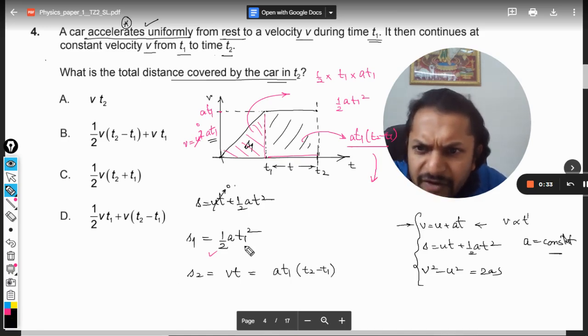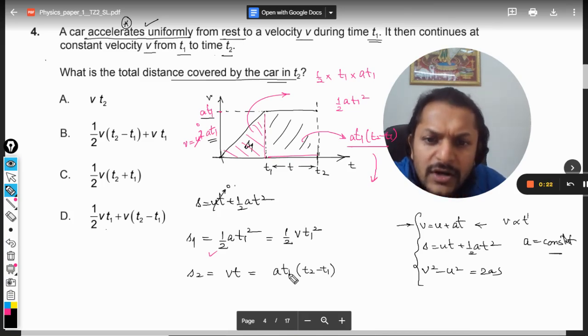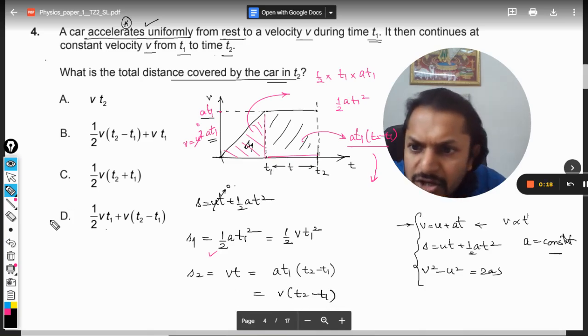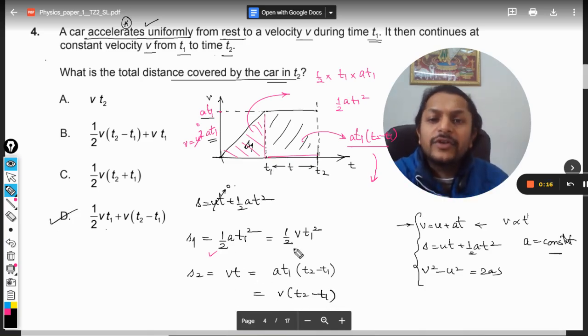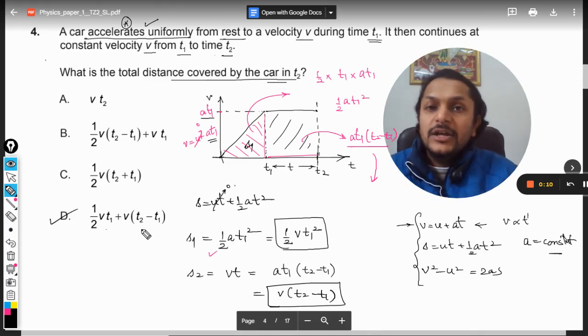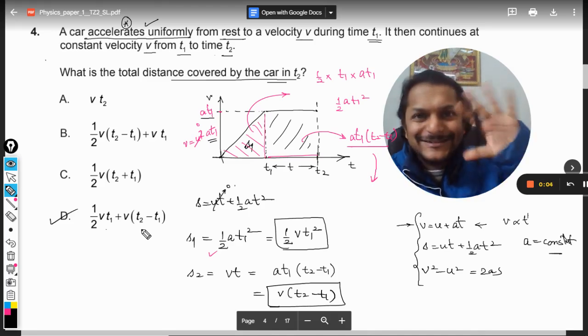So our answer will be half A t1 squared. Now they are writing this At1 as V, so half V t1 plus V into t2 minus t1. So clearly D is our right option: half V t1 plus V into t2 minus t1. So my dear students, this is how we do this question. This is Professor Guru. Please subscribe to the YouTube channel. All the best, bye.